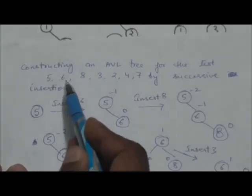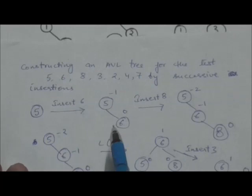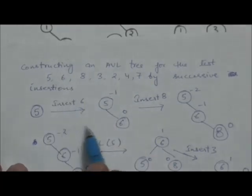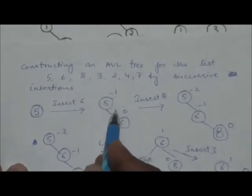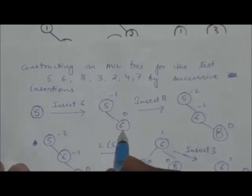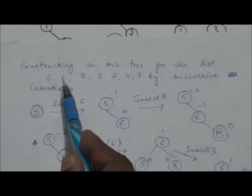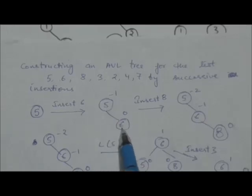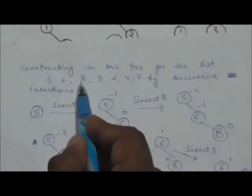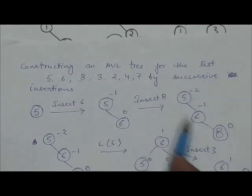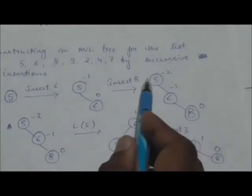After this we will insert key 6. When we insert a new key, it is inserted in the same way as keys are inserted in a binary search tree. After inserting 6, the AVL tree is balanced. The next element is 8 — when we insert key 8, we will get this AVL tree.